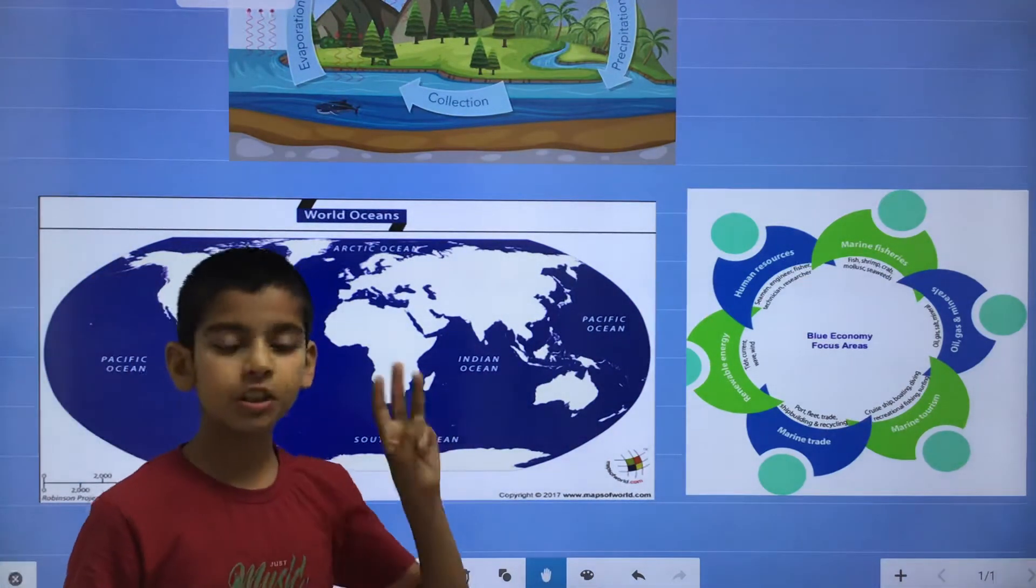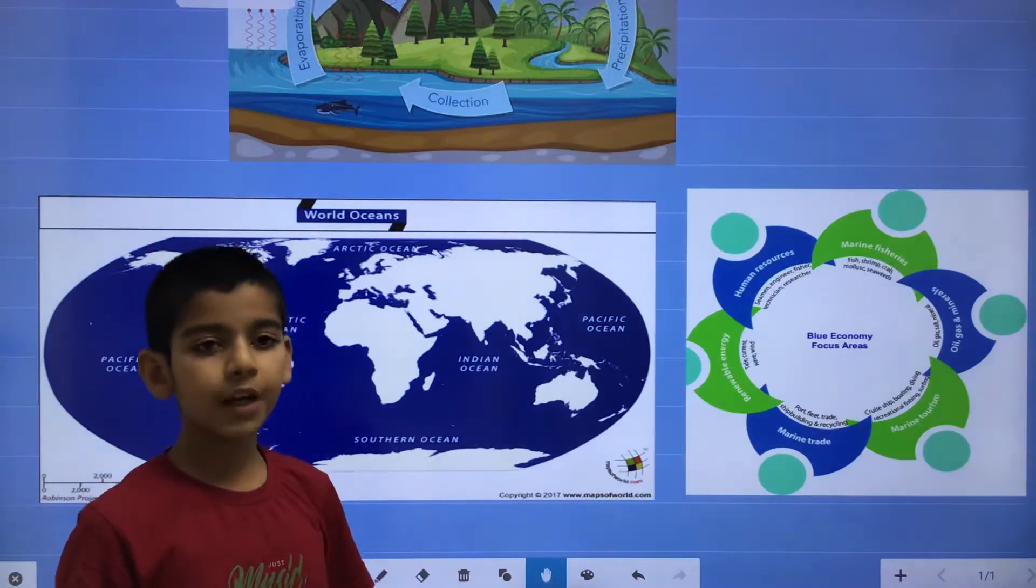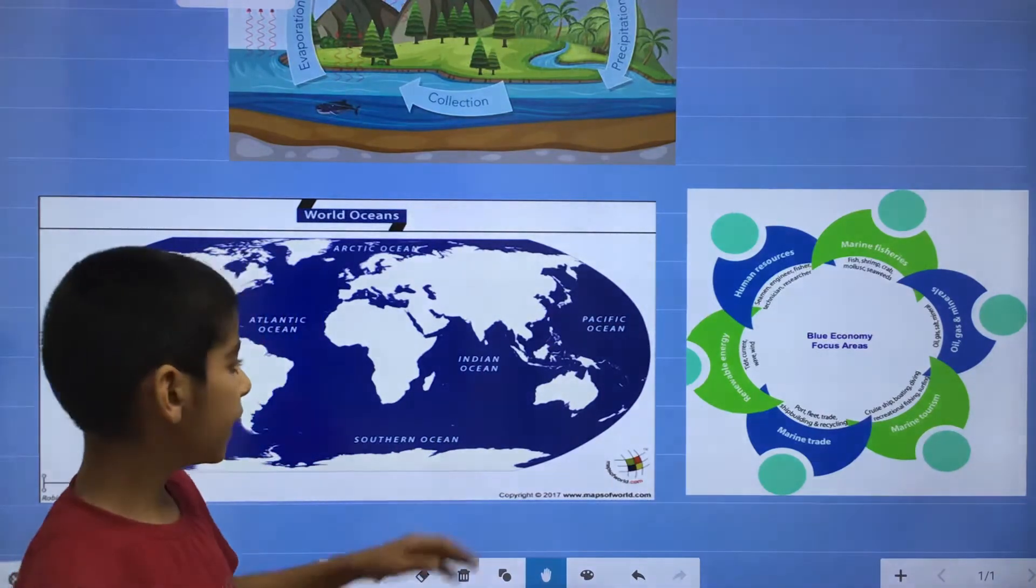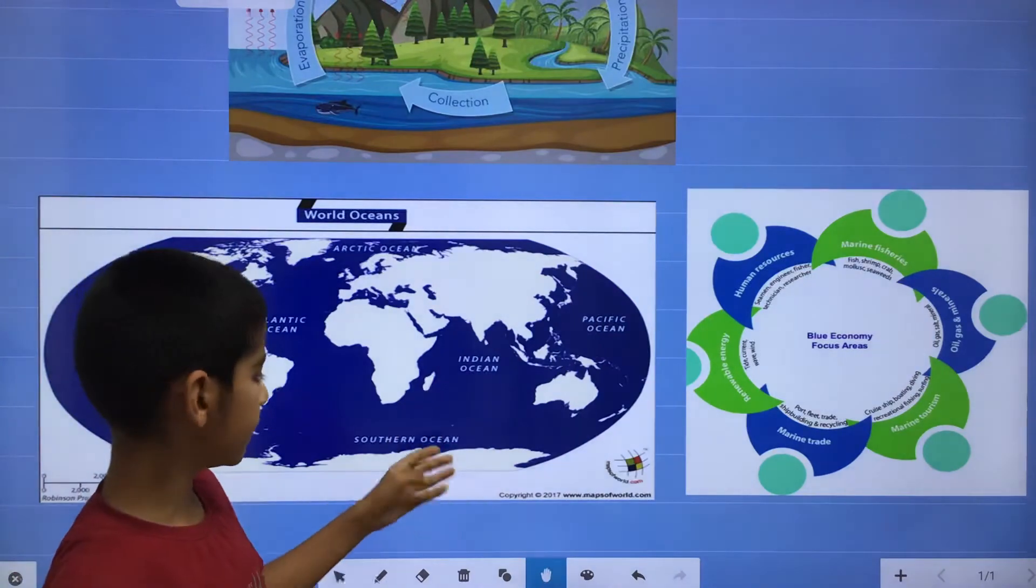Indian Ocean is the third largest ocean named after India. And it is located between, in the South, there is Southern Ocean.